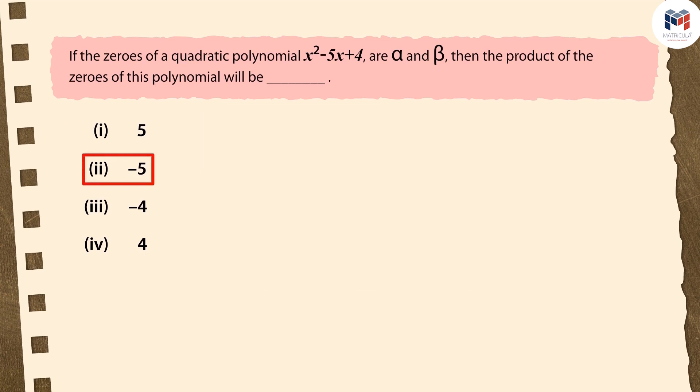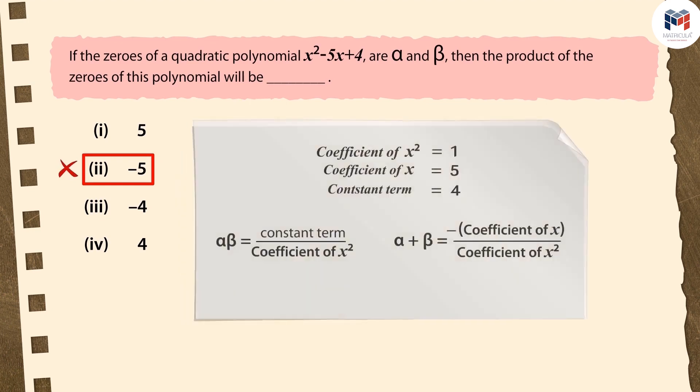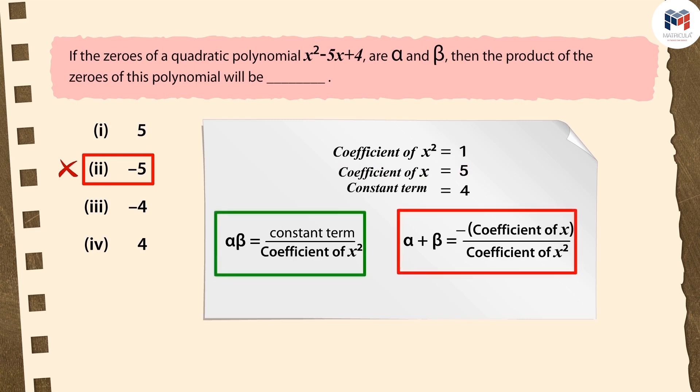If you have selected the second option, then your selection is incorrect. There are two reasons. First, while writing the coefficient of x, you forgot to prefix it with a negative sign. Second, instead of using the formula for product of zeros here, you have used the formula to find their sum.